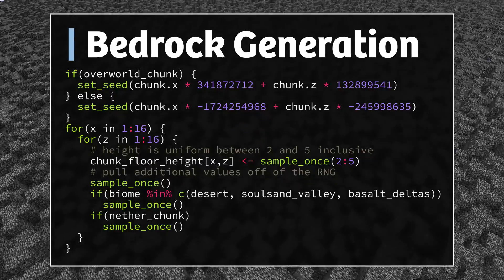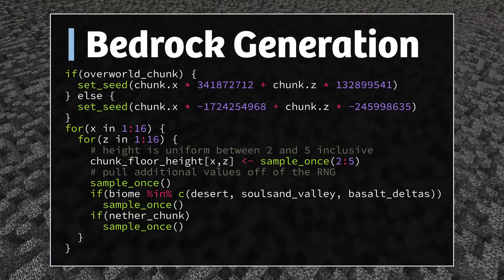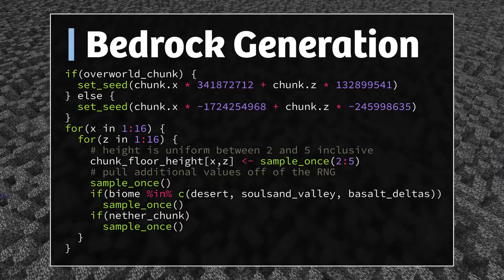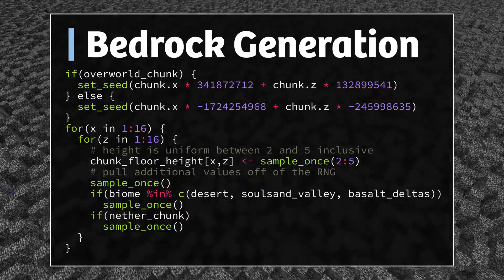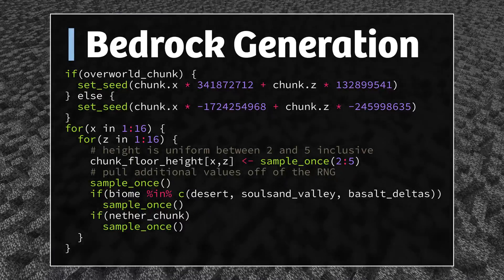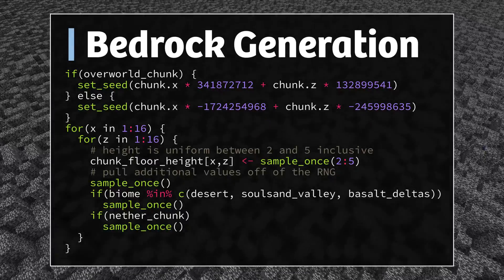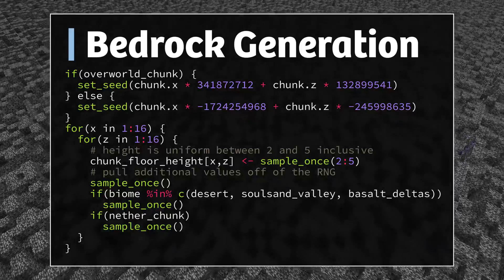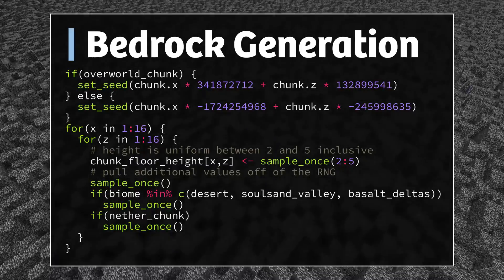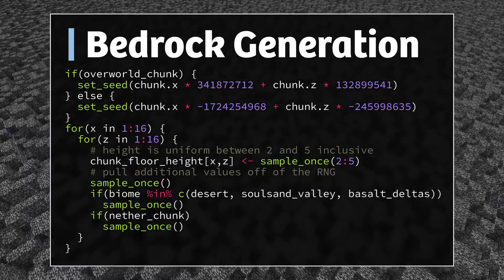How many times it reads from the random number generator between coordinates depends on the dimension and the biome. There's always at least one extra value read off the RNG. If the coordinate happens to be in a desert, soul sand valley, or basalt delta, the game also samples one more time because it's constructing more blocks in the vertical column. By desert here, I mean any biome in the overworld that will generate sandstone below sand, which includes desert biomes and beaches. In the nether, it pulls one more random number off the generator in order to build the roof of the nether.